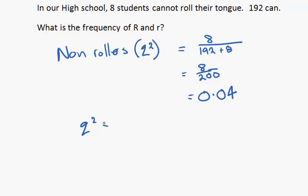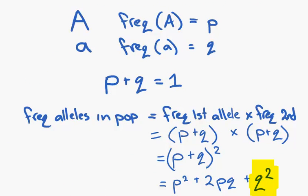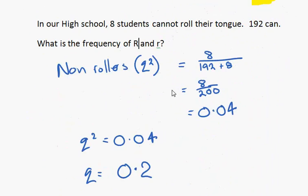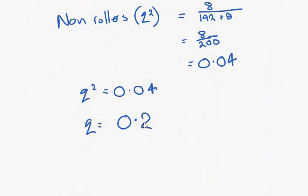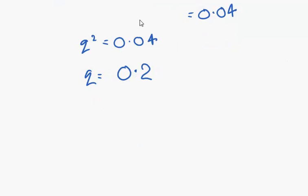Therefore, Q squared is 0.04. Q equals the square root of 0.04, which is 0.2. Now our question says, what is the frequency of big R and little r? We've just worked out the frequency of small r, which was Q, the frequency of our recessive allele. If we know the frequency of our recessive allele, we can work out the frequency of the dominant allele quickly, because P plus Q equals 1. So if Q is 0.2, P must be 0.8.